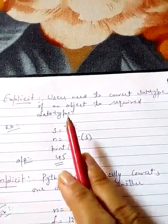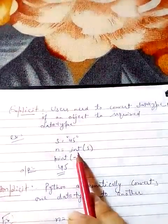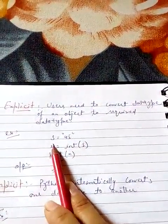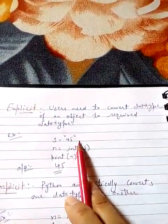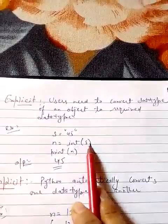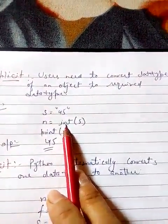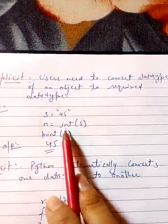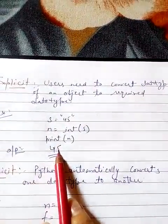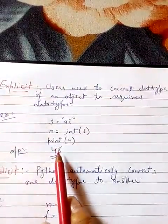Explicit type conversion: Here the user needs to write the data type they want to change to. For example, I'm taking s as a string variable and passing 45 as a string. I'm taking n variable here. I'm converting this s into integer value by passing the int function, which is used to convert string into integer. So print n, and now the answer will be 45 as an integer value, not as string. This is explicit type conversion.